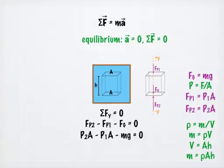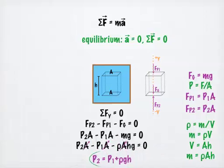We plug in our expression for mass into our equation and see that we can cancel the surface area A from each term. We were looking for an expression that tells us how pressure changes with depth, so we will solve this equation for P sub 2, our pressure at the greater depth.